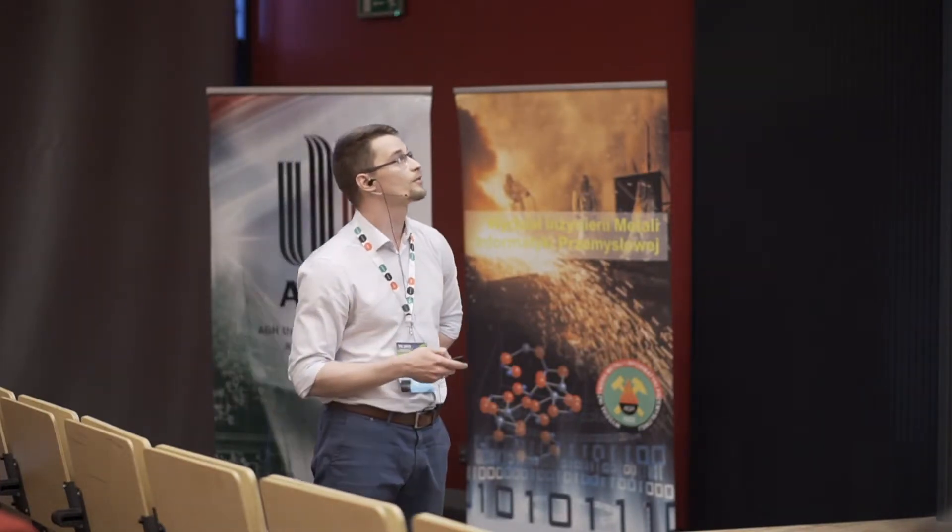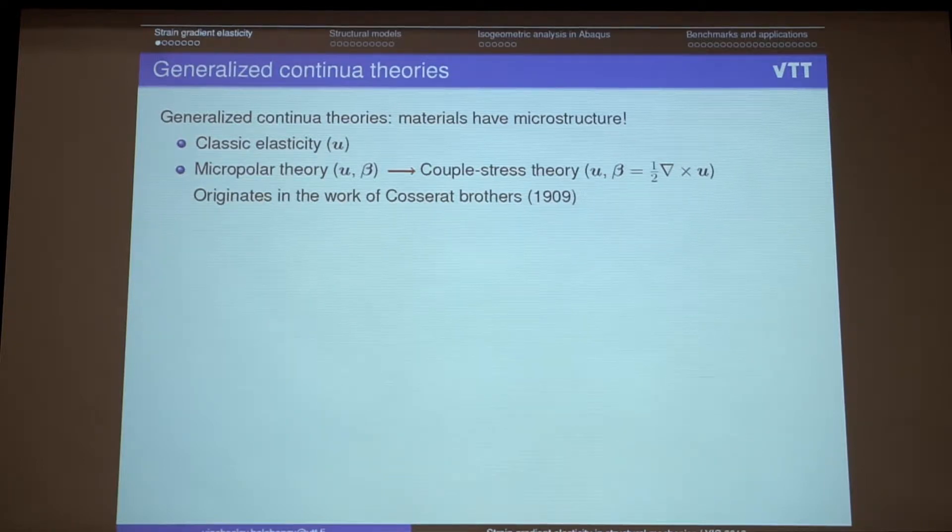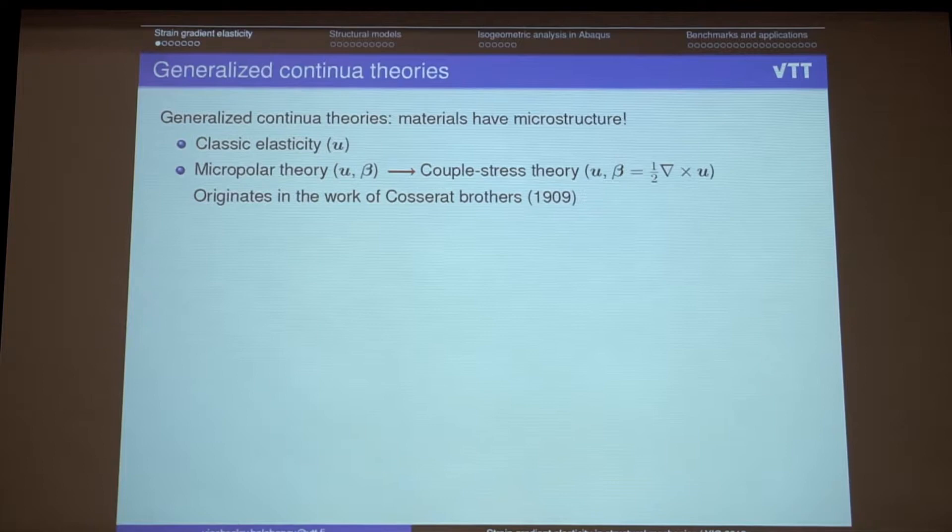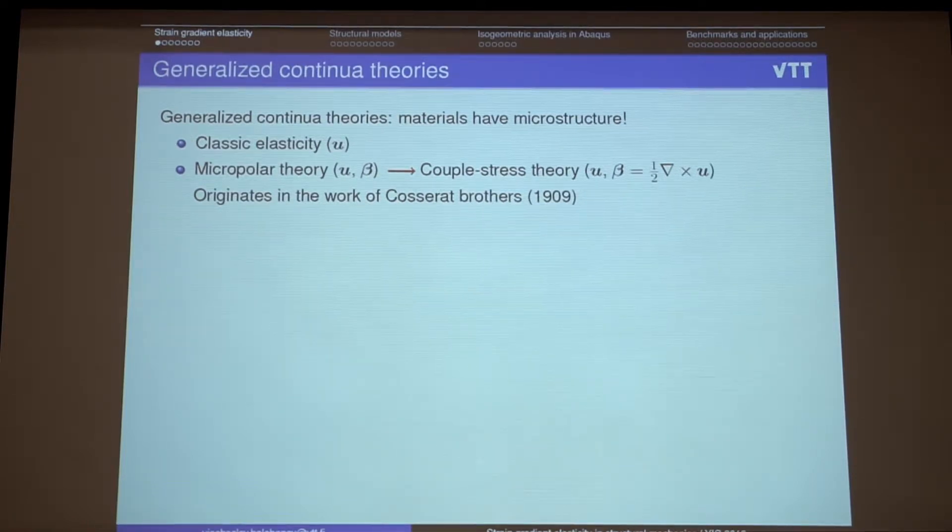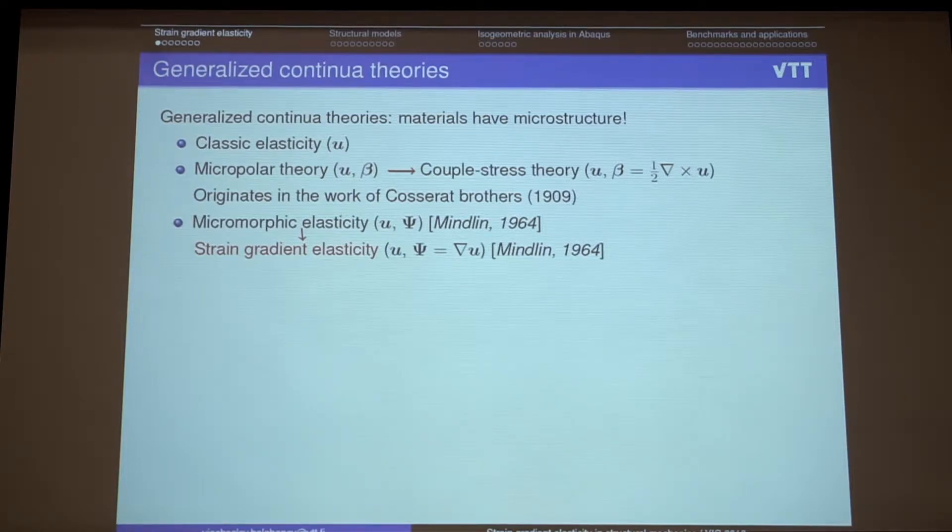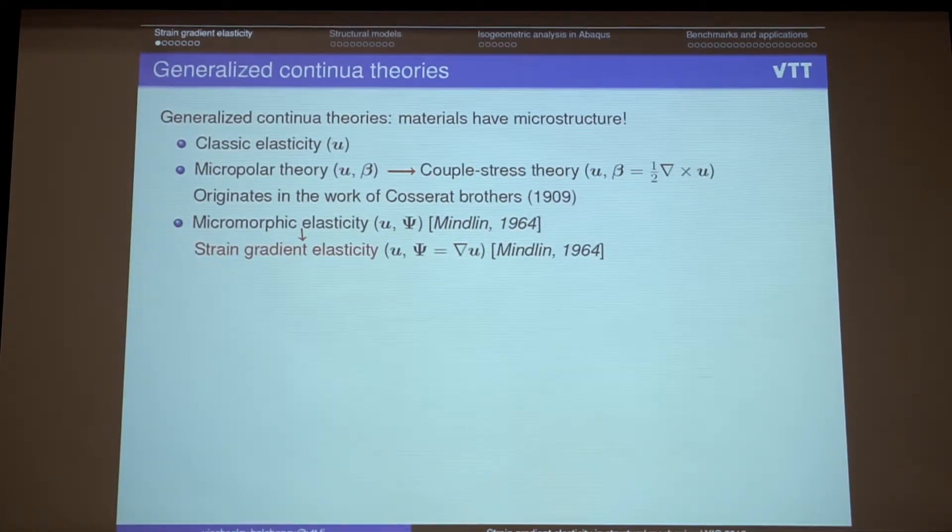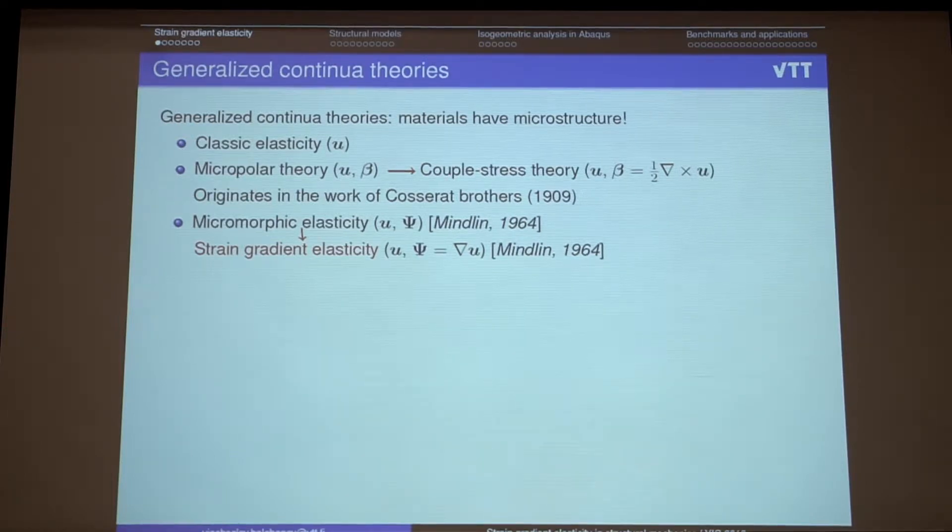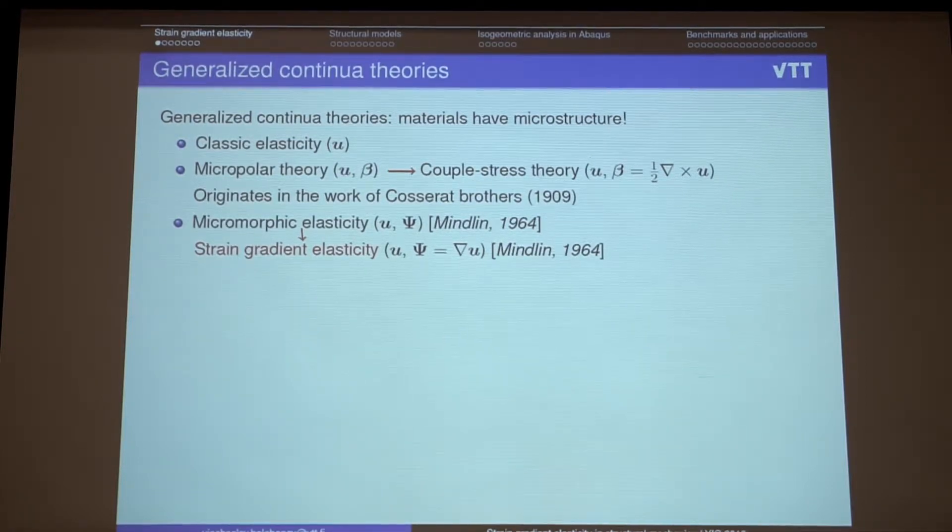There are several theories which originate more than one century ago from the works of Cosserat brothers, so-called micropolar theory which assumes that there is an additional vector of unknowns, vector of rotations addition to the vector of displacements. But the theory which we consider is strain gradient elasticity, which implies that we can add additional tensor of unknown variables, and then we can add a micro deformation tensor, and then we simplify this theory by assuming that this is just gradient of the displacements, so we don't have any additional degree of freedom, but we have additional terms in the energy.